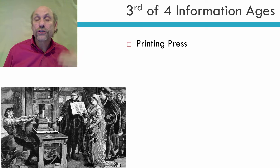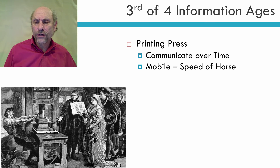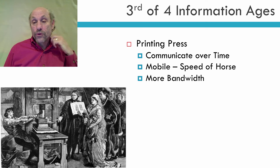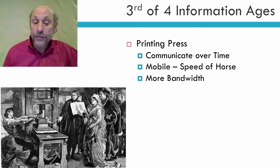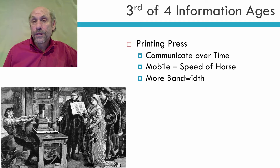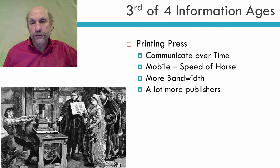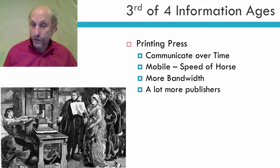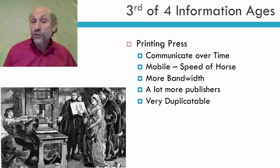The third information age is the printing press, and this was a huge step forward. Again, you could communicate over time and over distance, but you were still limited to the speed of a horse. You had a lot more bandwidth, because now you can create books that were fairly efficient in putting information together. And a lot more publishers — during this age, many people bought their own printing press. Benjamin Franklin and many non-government, non-church entities had their own printing press. Obviously it was still limited to people who were wealthy and educated, but it's important that you had a lot more publishers. And of course a book is very duplicatable.